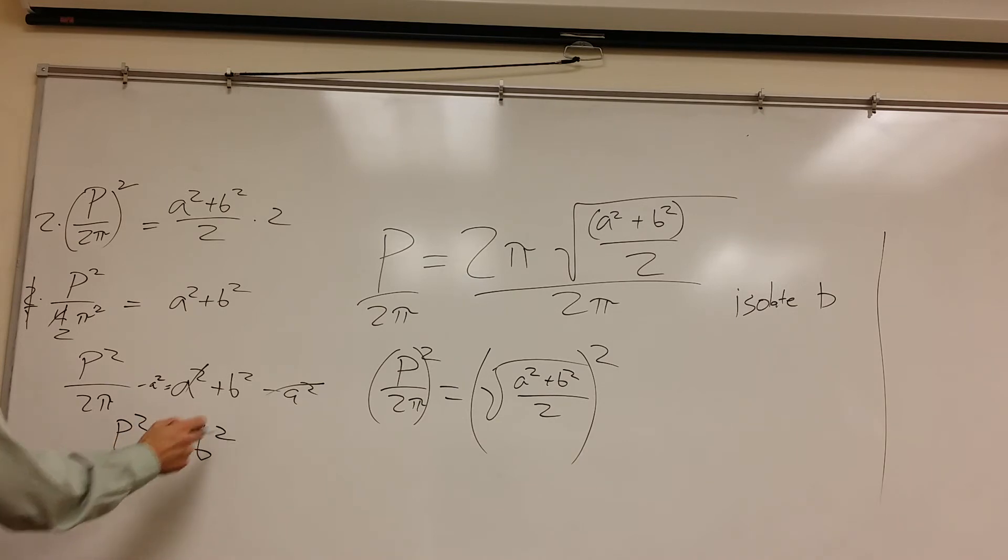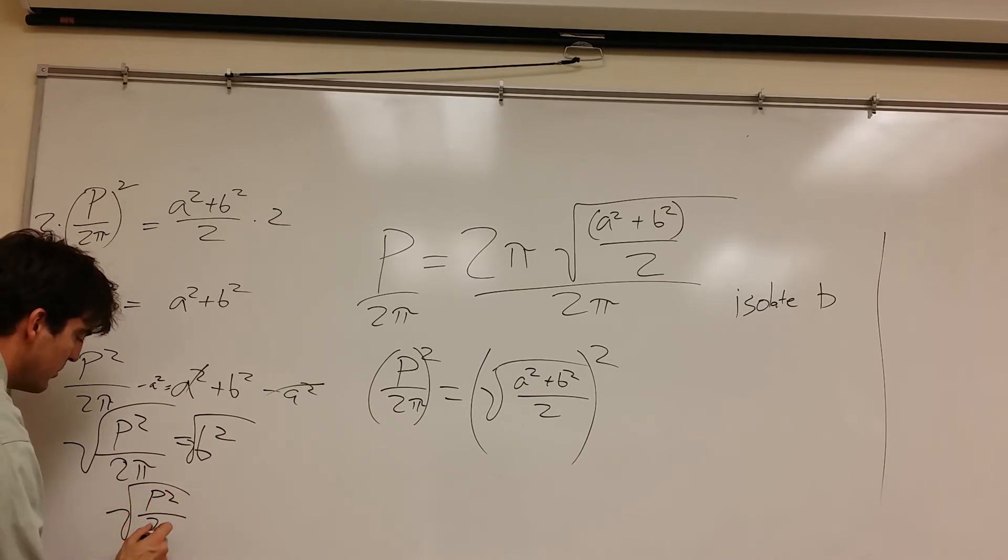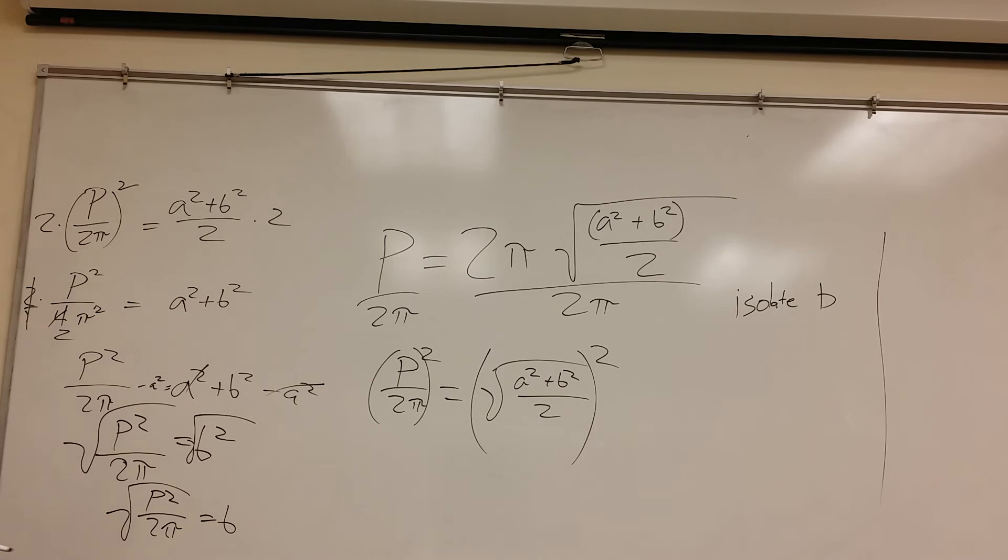Now I just got to get rid of the square. So to do that, I square root both sides. So the square root of P squared over 2π equals B. That's the answer.